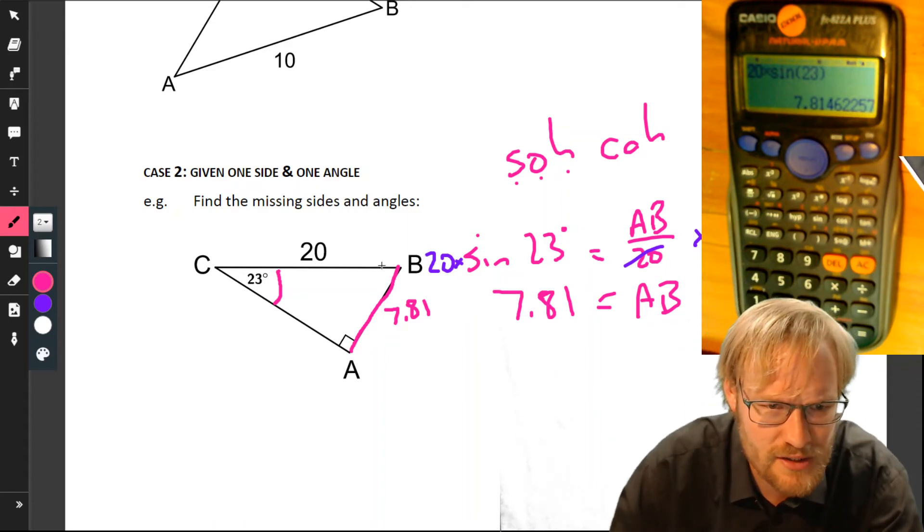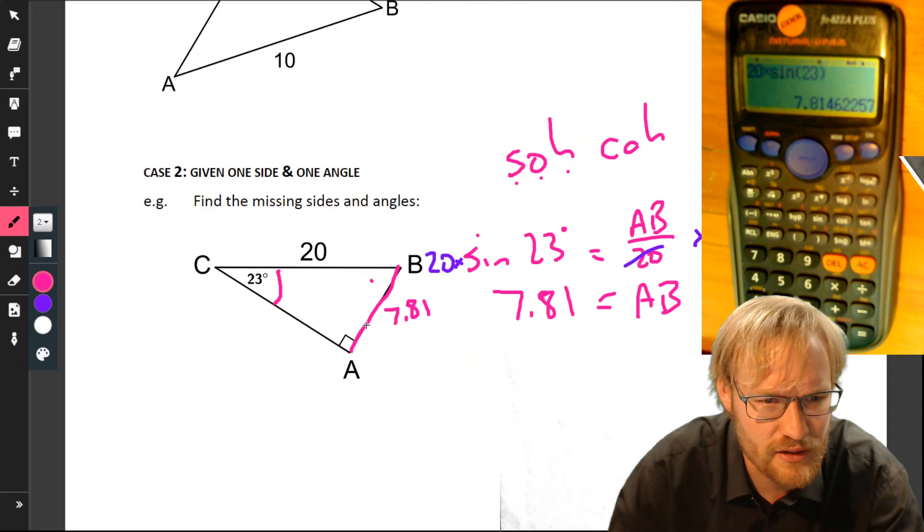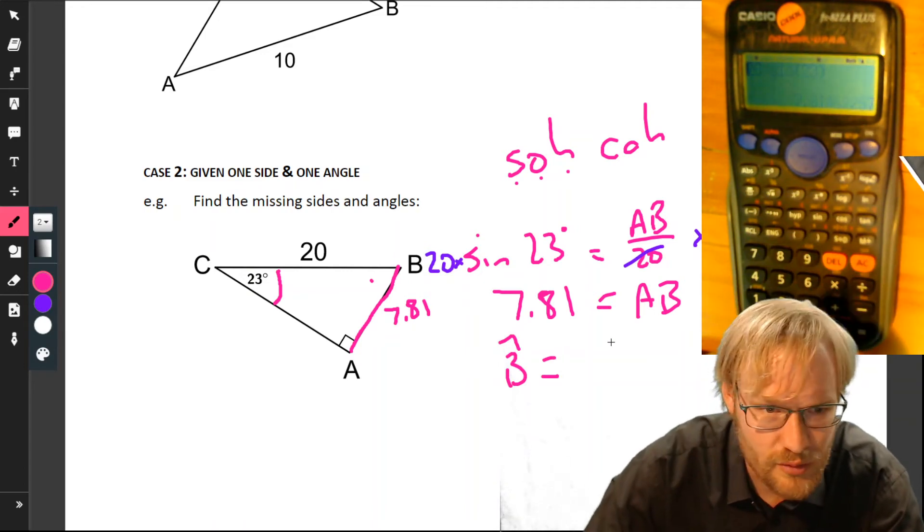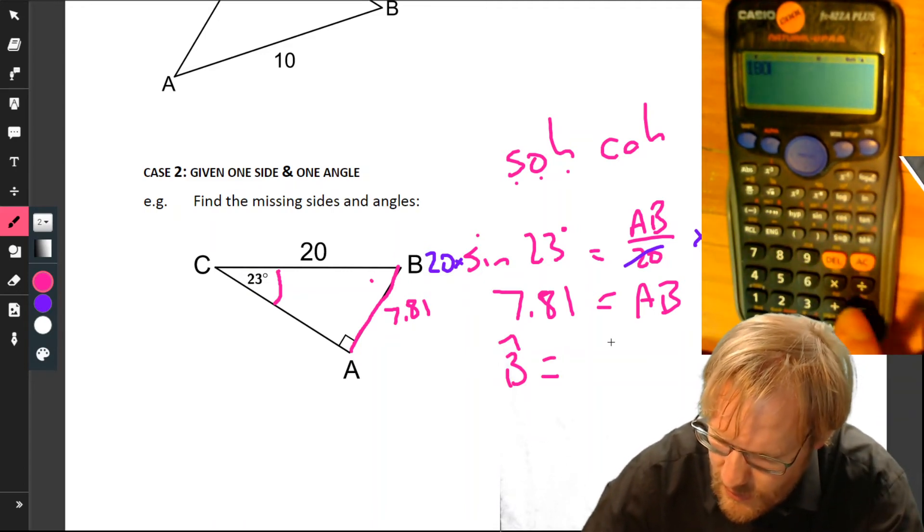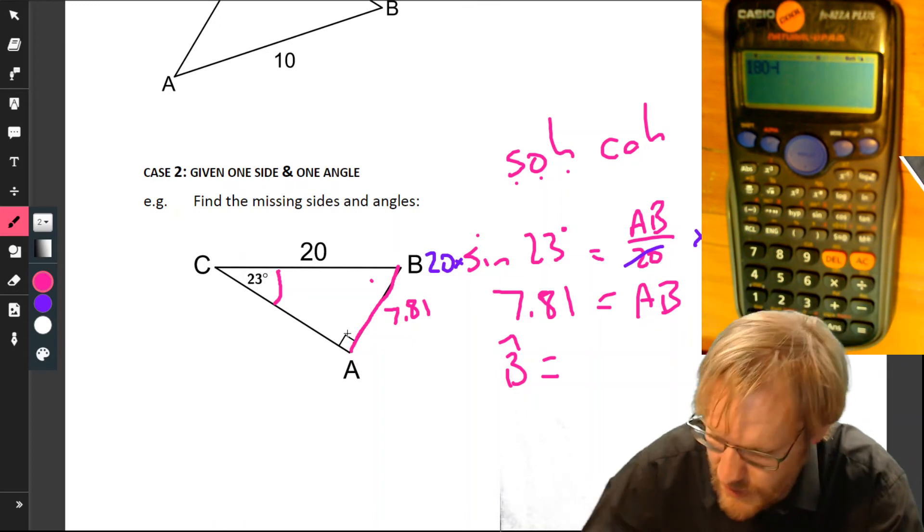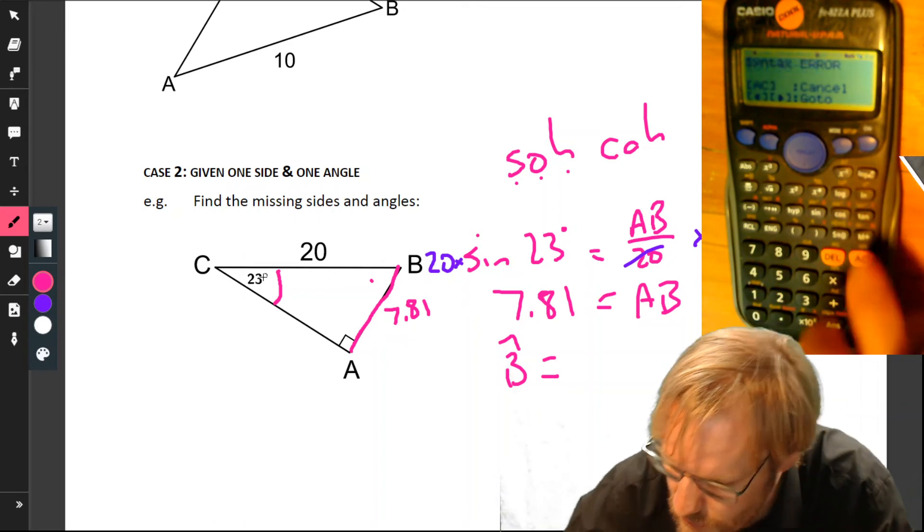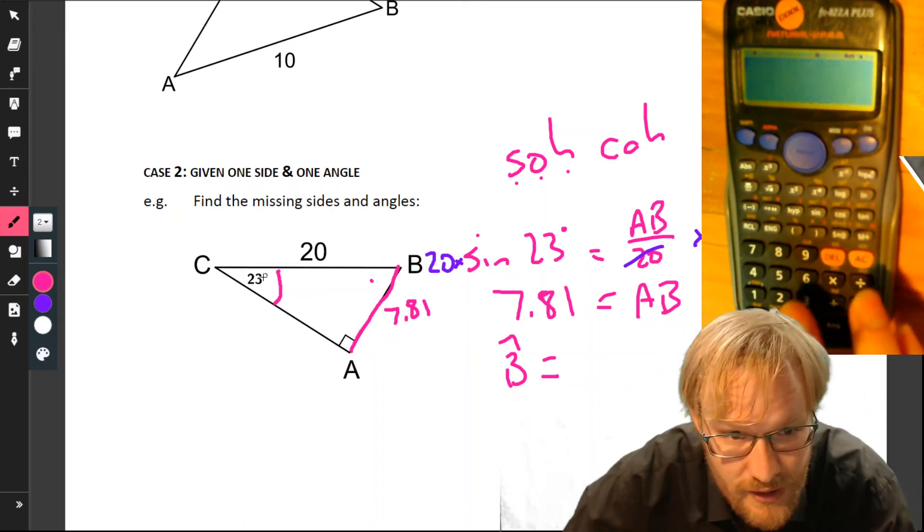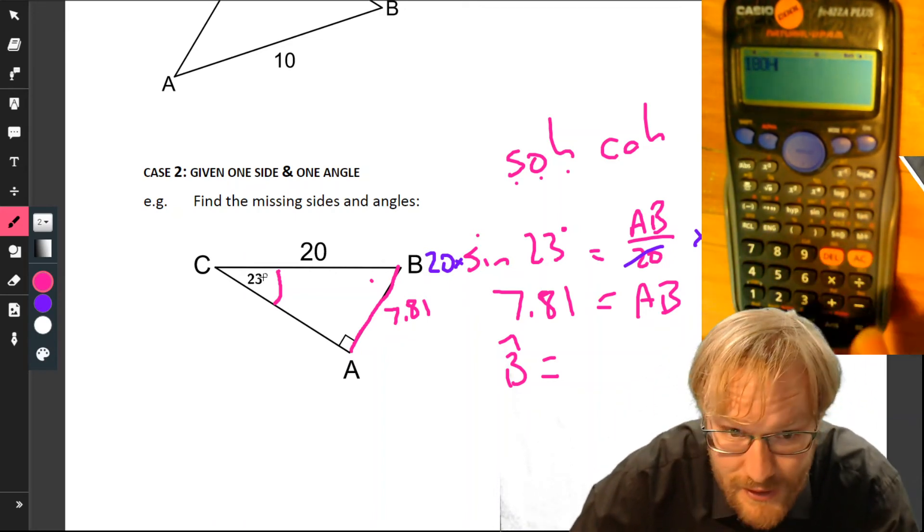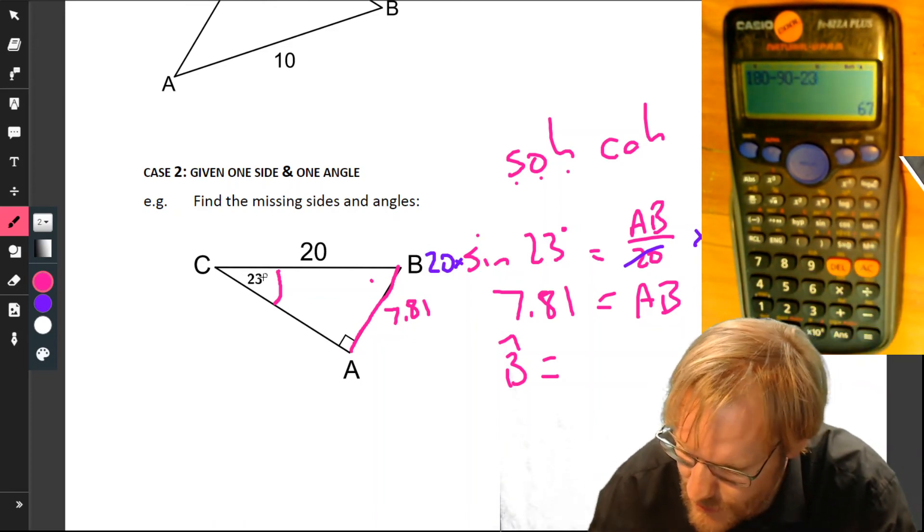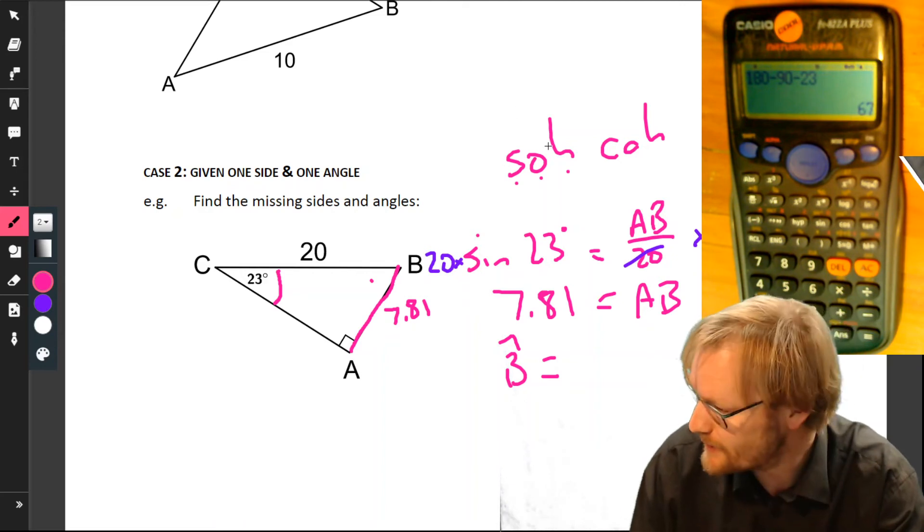Now we need to work out this angle. Sum of angles in triangle: 23 plus 90 plus that gives you 180. So angle B is 180 minus 90 minus 23, equals 67 degrees.